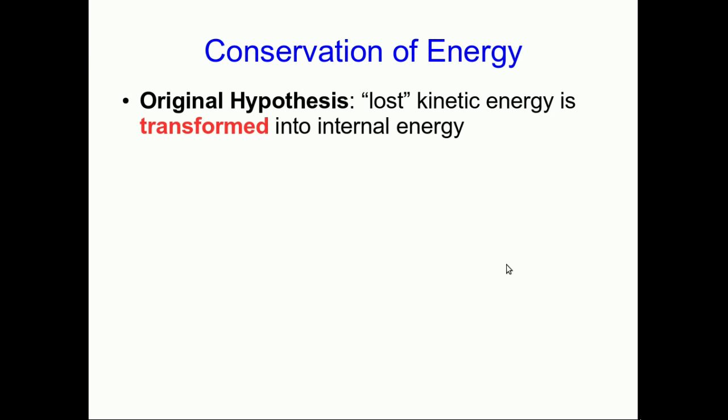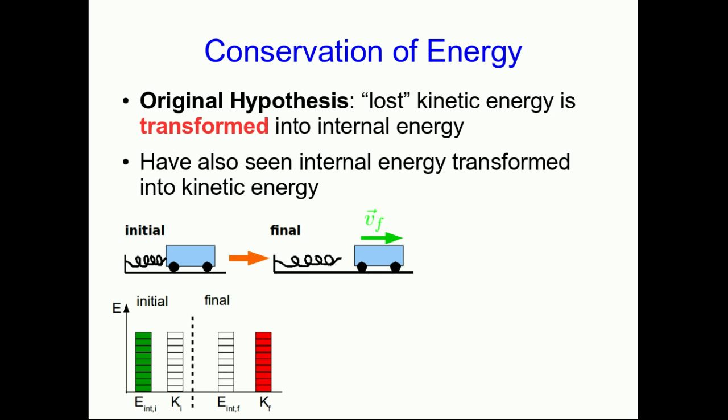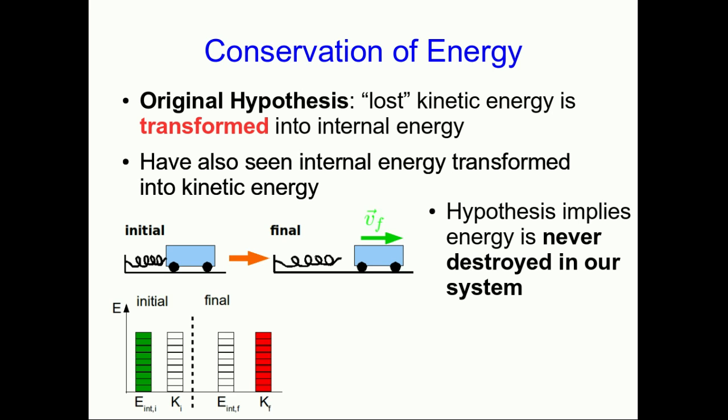Our original hypothesis a few lectures ago was that whenever kinetic energy is lost in a system, it's transformed into internal energy. We've also seen that internal energy can be transformed into kinetic energy. We put forth this hypothesis originally to imply that the energy in our system never gets destroyed—it just gets transformed into other forms in our system.